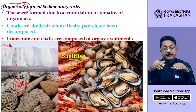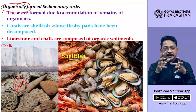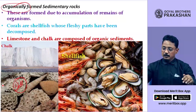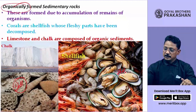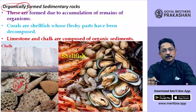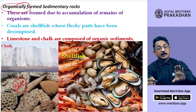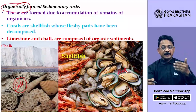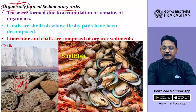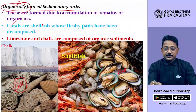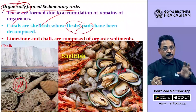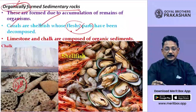Why are they called organically formed? Because organisms like corals and shellfish form these shells — something formed by a living thing is an organic thing. Therefore, these are organically formed sedimentary rocks. The shells are formed by living creatures — shales, for instance. Corals and shellfish: their fleshy part gets decomposed but the shell remains, and from that shell these rocks are formed.